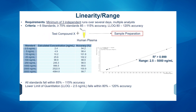Now let's look at linearity and range. We created a calibration curve ranging from 2.5 to 5,000 nanograms per mL, and this run was repeated over several days using several analysts. Our accuracy fell within 85 to 115 percent, which is within ICH-M10 guidelines, and our lower and upper limits of quantitation were within 80 to 120 percent.